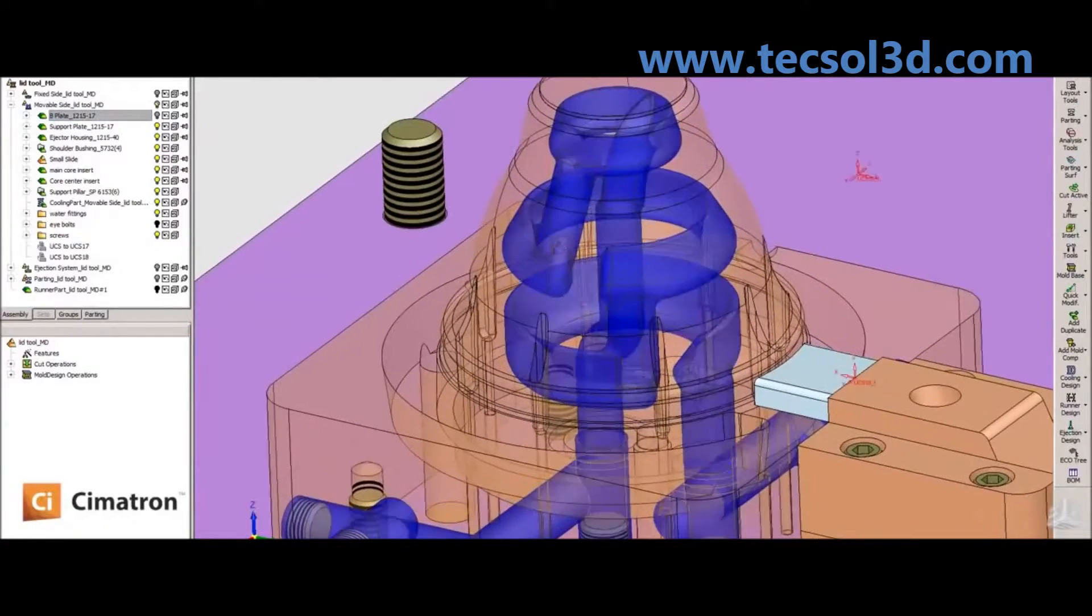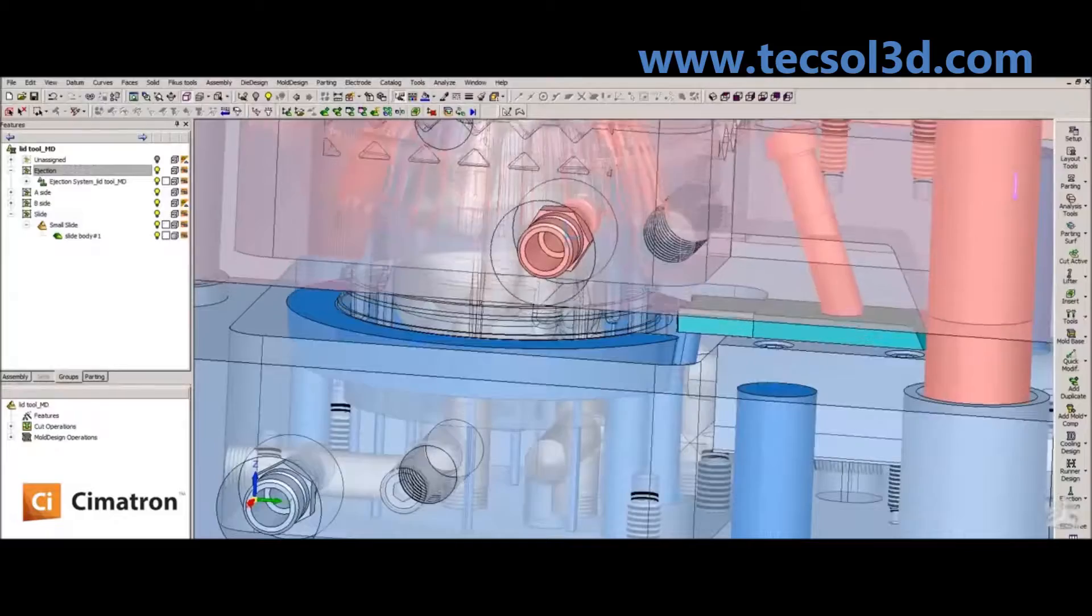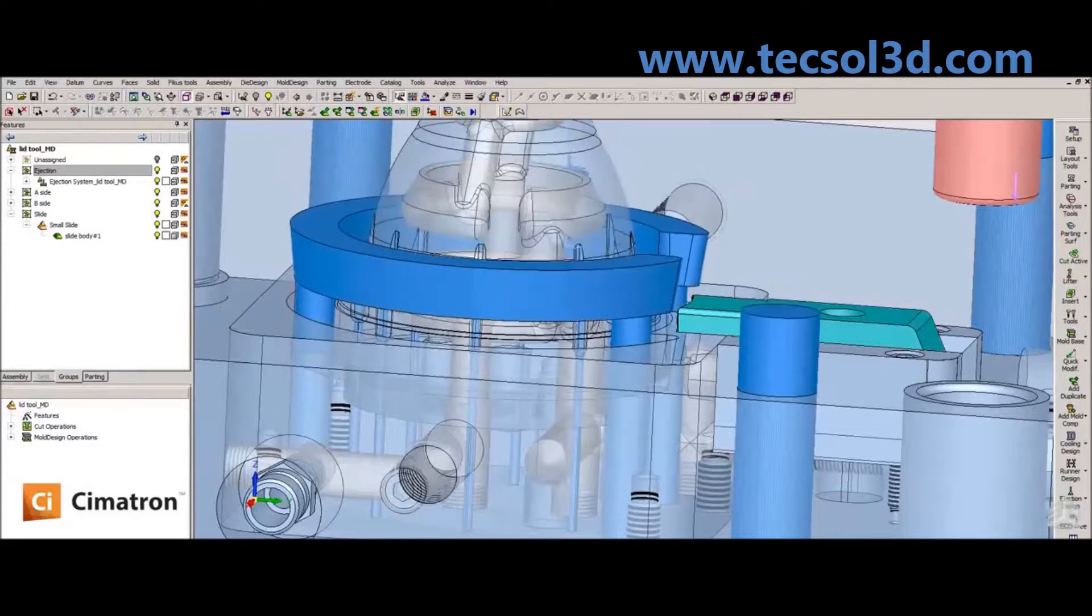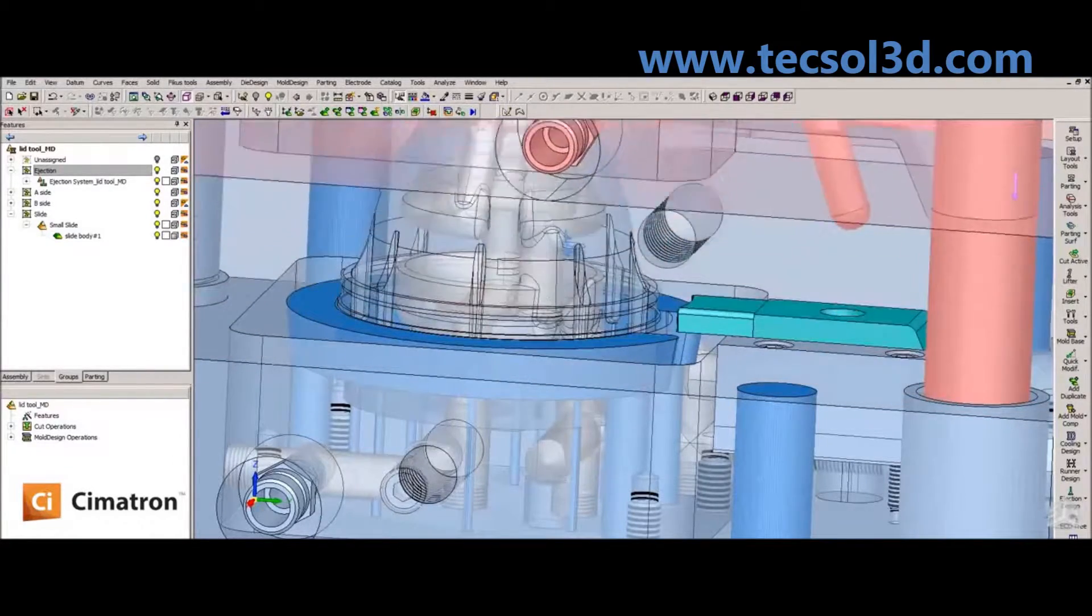As he snakes that water line through the core, he may need to change its shape, its diameter, and may need to check to see if it's going to possibly come close to an ejector pin. All the while, he can be doing that and checking to make sure that it's within a minimum condition of material.